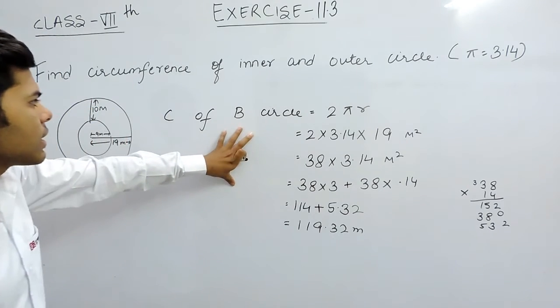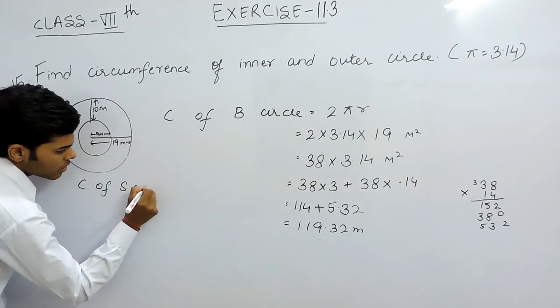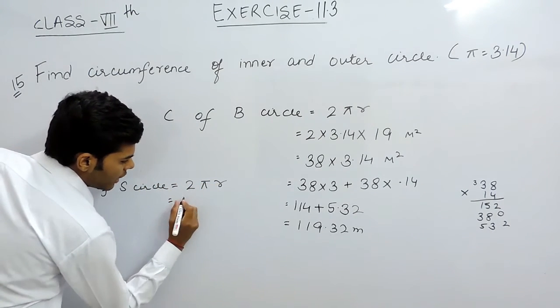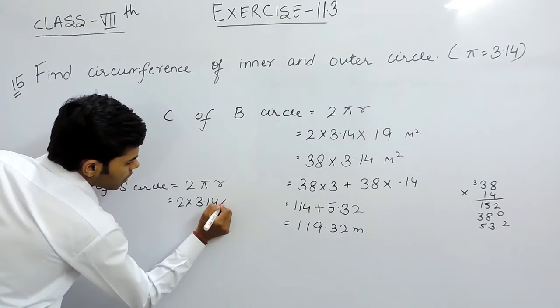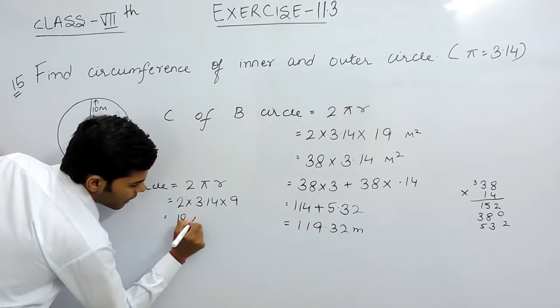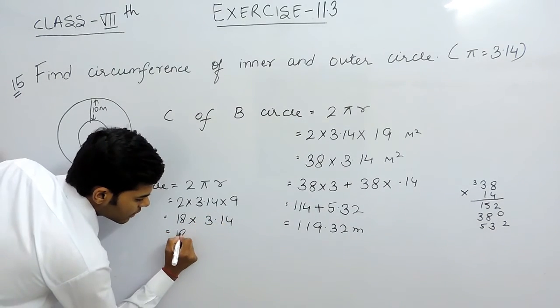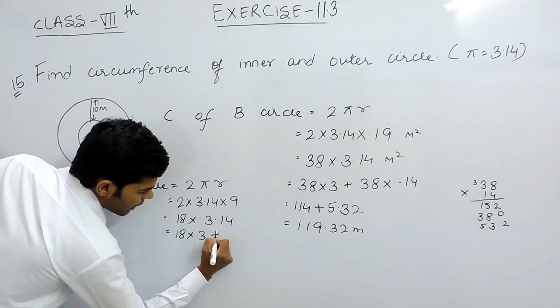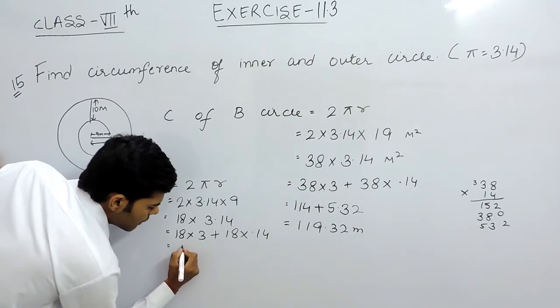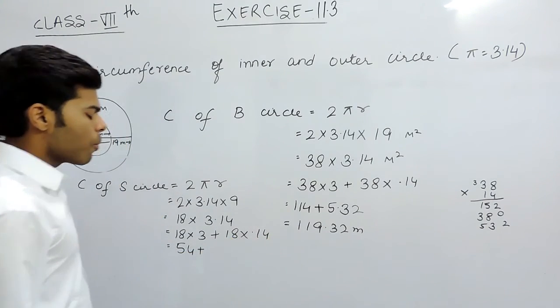Now circumference of smaller circle will again be equals to 2 pi r, that will be 2 multiplied with pi, 3.14 multiplied with r, that is 9. So it will be 18 multiplied with 3.14, that will be 18 multiplied with 3 plus 18 multiplied with 0.14, that will be 54 plus 18 multiplied with 0.14.